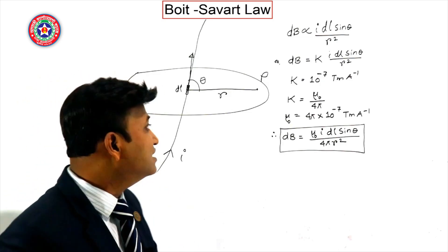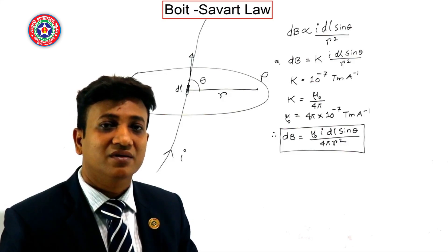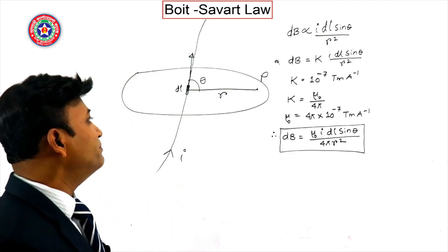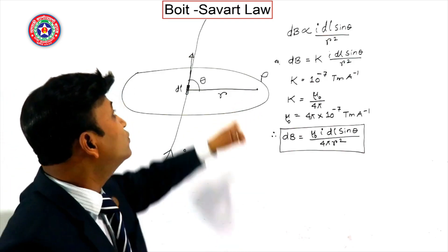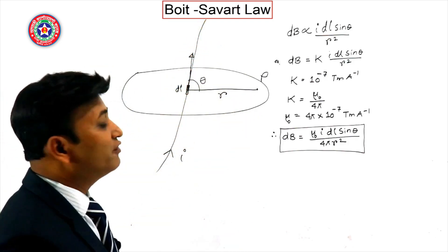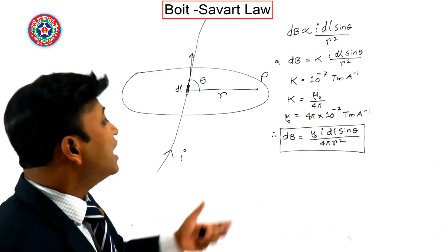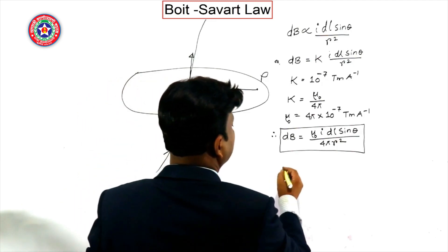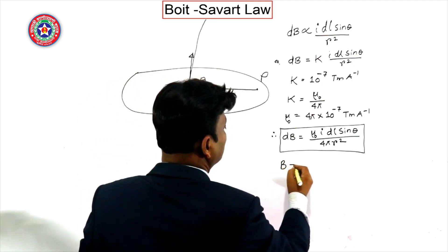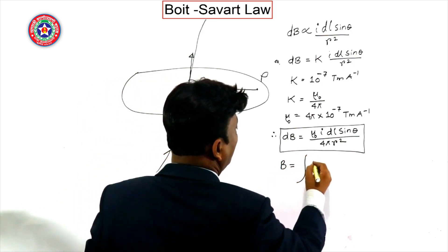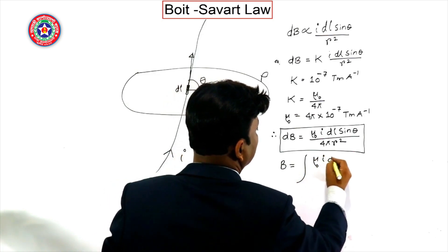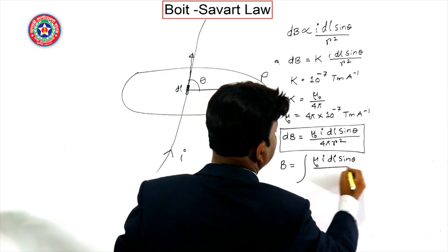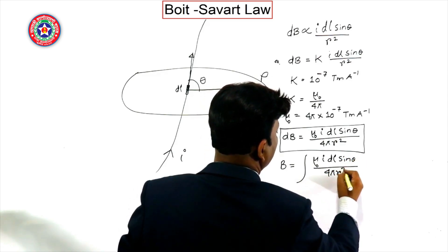This gives the magnetic field at point P due to the infinitesimal element. If we want to get the total magnetic field at point P due to the whole length of the wire, we integrate this equation and get: B = ∫ μ₀ · I · dl · sinθ / (4π · r²).